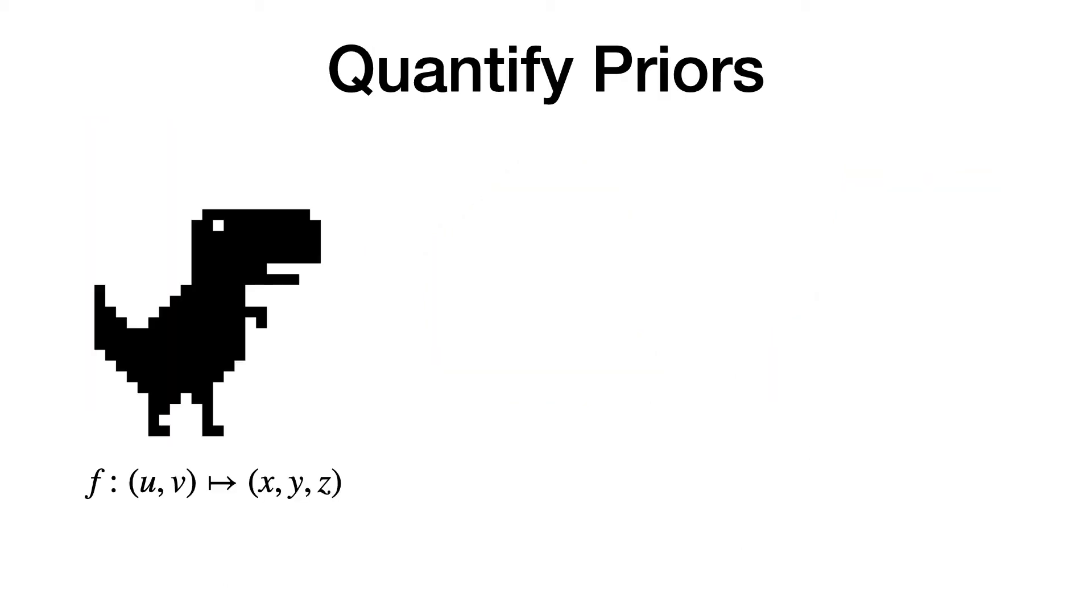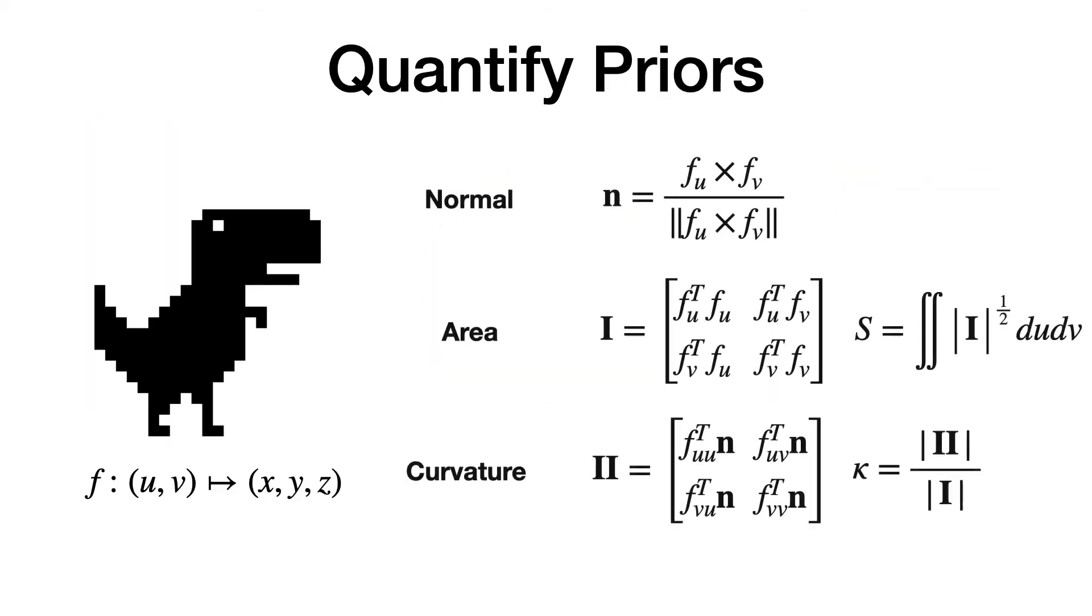If the surface parameterization is known, then one can compute quantities such as surface normal, area, and curvature using differential geometry. This quantity can then be used to describe the physics-inspired prior.